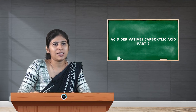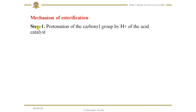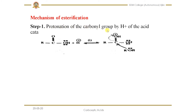The mechanism involves around five steps. In the first step, protonation of the carbonyl group takes place. The hydroxyl oxygen of the carboxylic acid accepts a proton from the acid catalyst — sulfuric acid or HCl. This lone pair of electrons accepts the proton, and as a result we get the protonated carbonyl group.